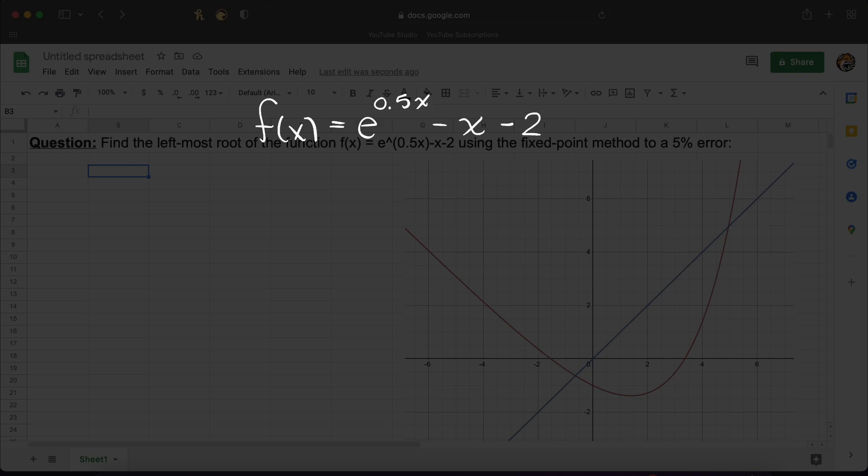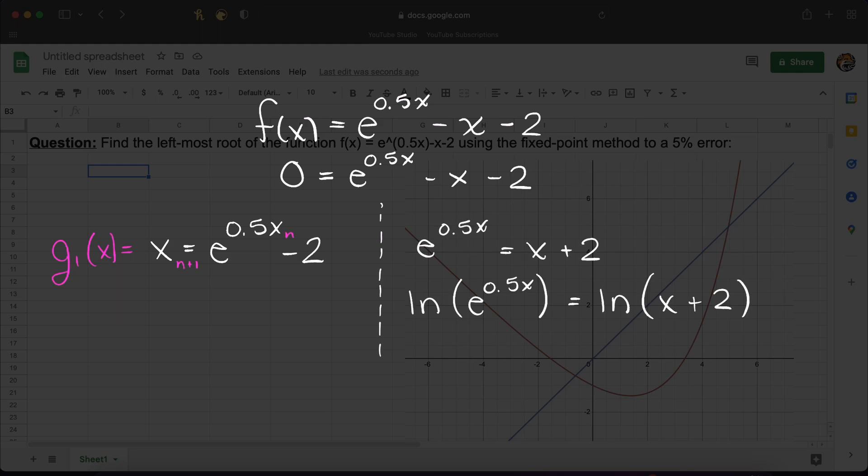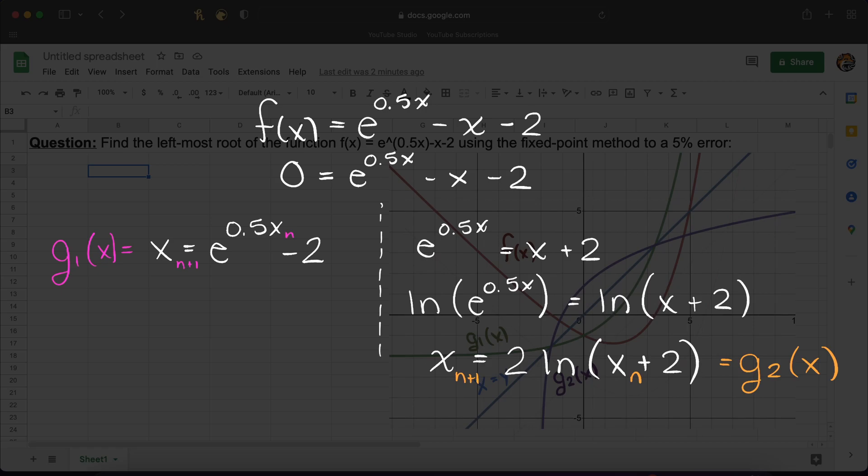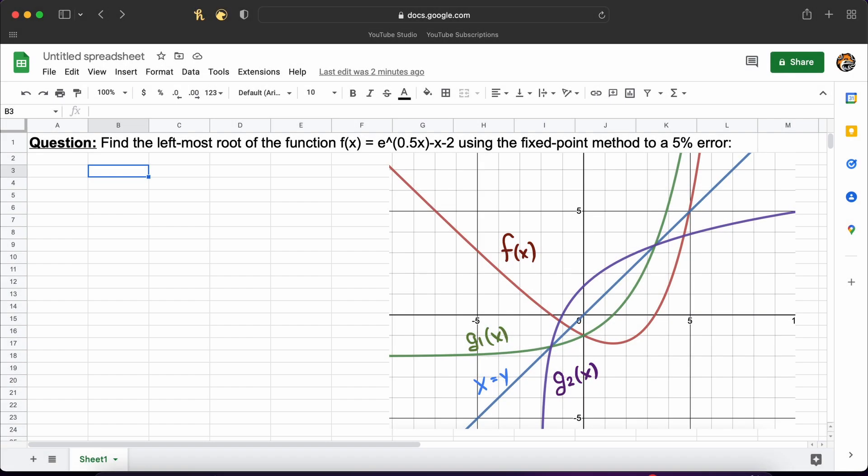To begin we first need to find our g functions for f, that is we need to set f to 0 and solve for one of our x terms. As you can see here I have completed this for you and we have two potential g terms, that is e to the power of 0.5x minus 2 for g1 and 2 ln plus 2 for g2.